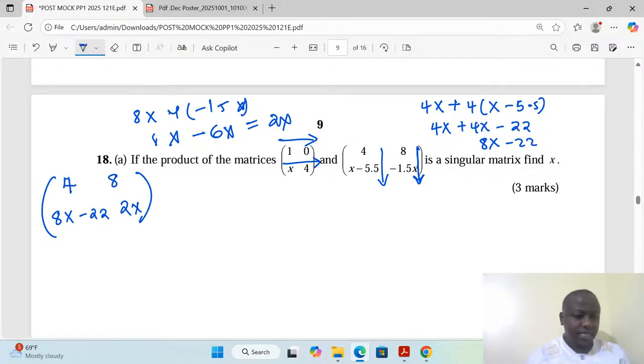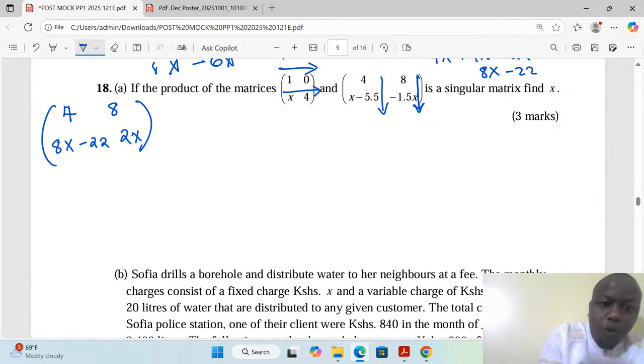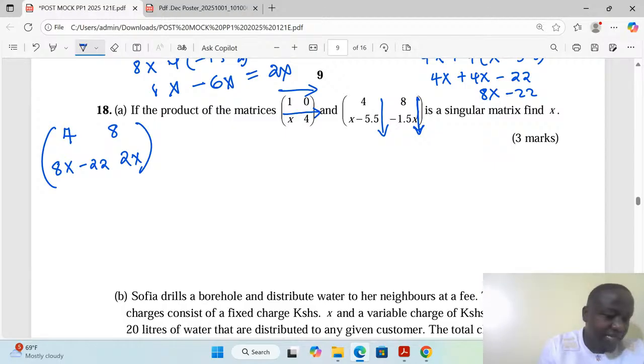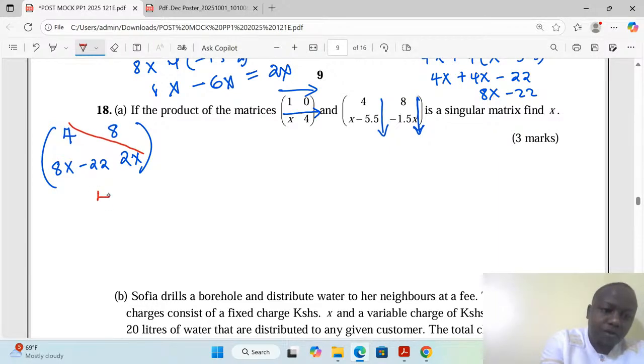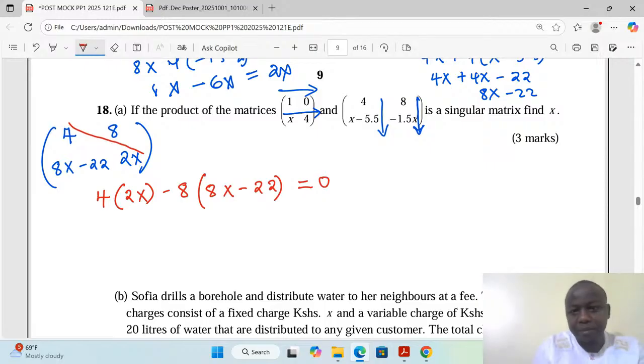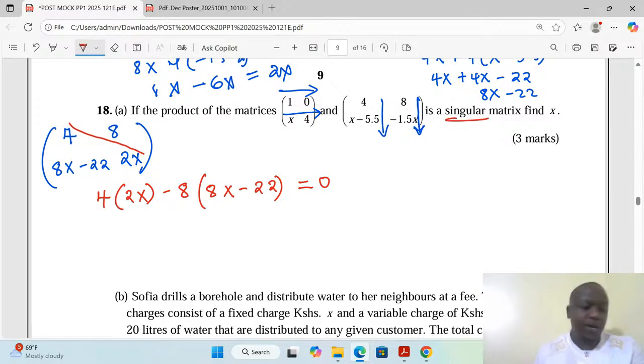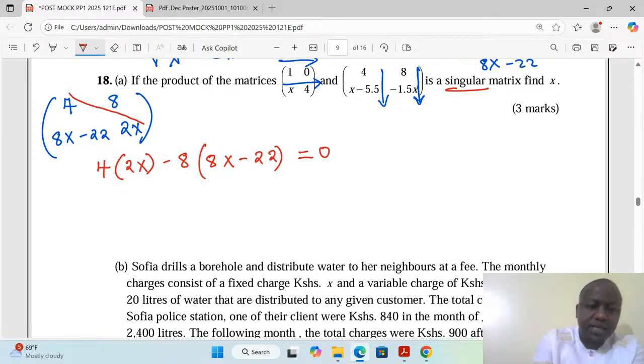This matrix, the product of the matrices that you can see there, is a singular matrix meaning that it has a determinant of zero. What is determinant? We take the product of elements in the leading diagonal, 4 into 2x, minus product of elements in this other diagonal. Now we're supposed to get zero. The value of the determinant is zero just because the matrix is singular.